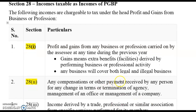The second point under Section 28 is any compensation or other benefit received by any person for any change in terms or termination of agency, management of an office, or management of a company. If any compensation is paid due to modification or termination of a contract, that compensation is considered income and will be added back to your profits.